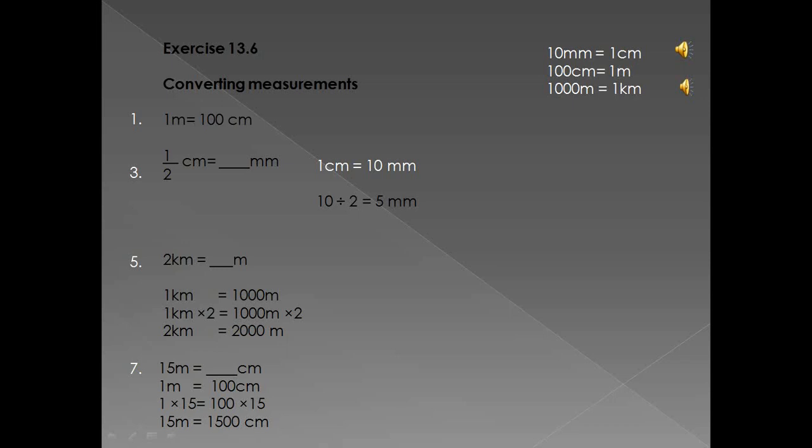Now you're going to do exercise 13.7. I'm not going to do an example with you because you only have to do the first three questions — number one, two, and three. It's pretty simple. They are word sums and you just need to figure out what the sum is and then show your work.